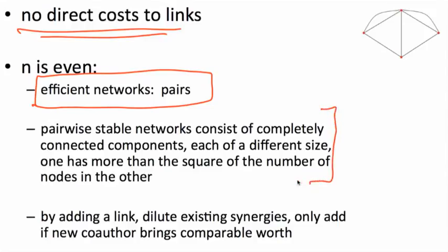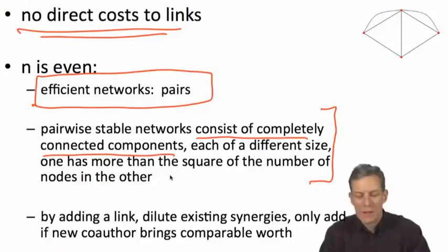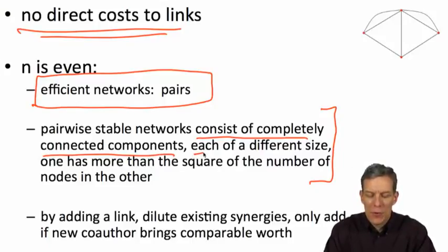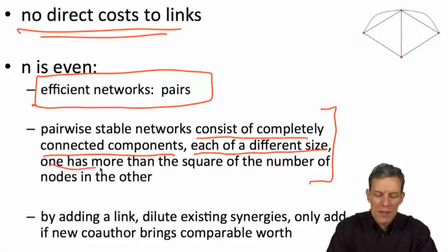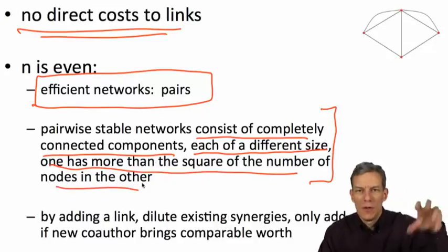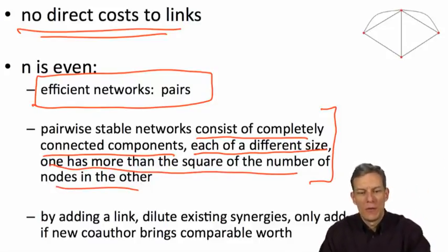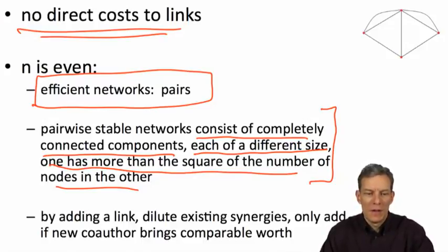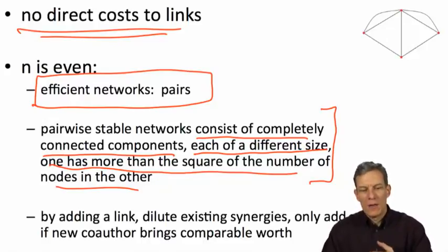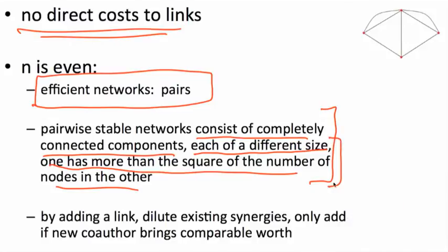Pairwise stable networks will see people overconnect in the same way we just saw. They're going to consist of completely connected components, but there could be some separate components. If there are more than one component, they have to be of different sizes — each one has to have more than the square of the number of nodes in the other in order to work. By adding a link, you dilute existing synergies, so you only want to add a new co-author if they bring comparable worth to your own values.